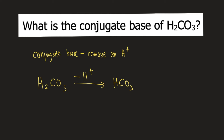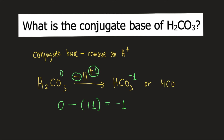The charge of H₂CO₃ is zero — it is a neutral molecule. So zero minus the charge of H⁺, which is positive one, gives us zero minus positive one, which equals negative one. So the charge of HCO₃ is negative one, written as HCO₃⁻. This is the answer to the question.